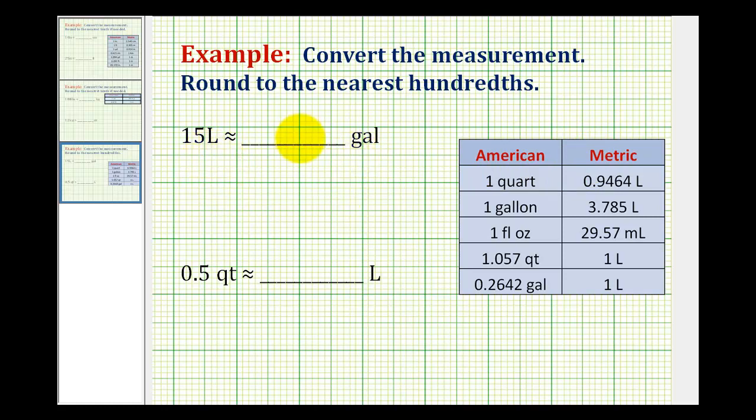So to convert 15 liters into gallons, we'll start by writing 15 liters in fraction form. So 15 liters over one, and now we'll go to our table to determine our unit fraction.